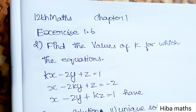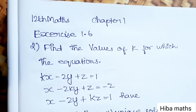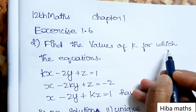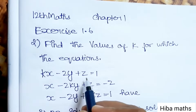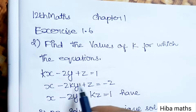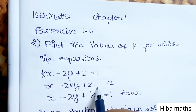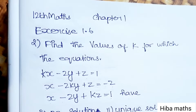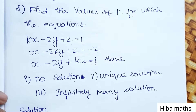Hello students, welcome to Hibamax 12 standard, Chapter 1, Exercise 1.6, second question. Find the values of k for which the equations kx - 2y + z = 1, x - 2ky + z = -2, and x - 2y + kz = 1 have no solution, unique solution, and infinitely many solutions.